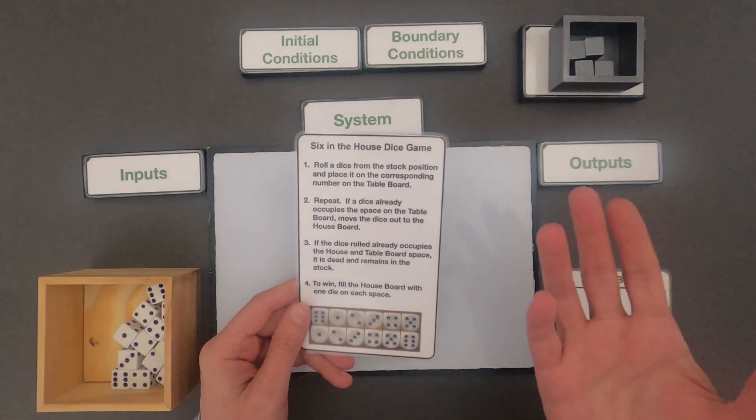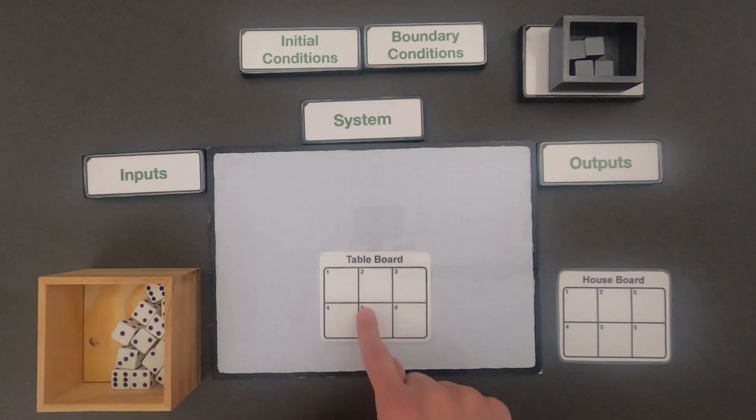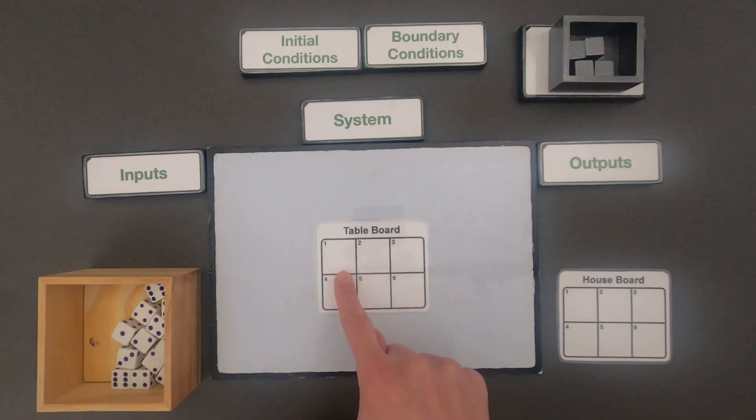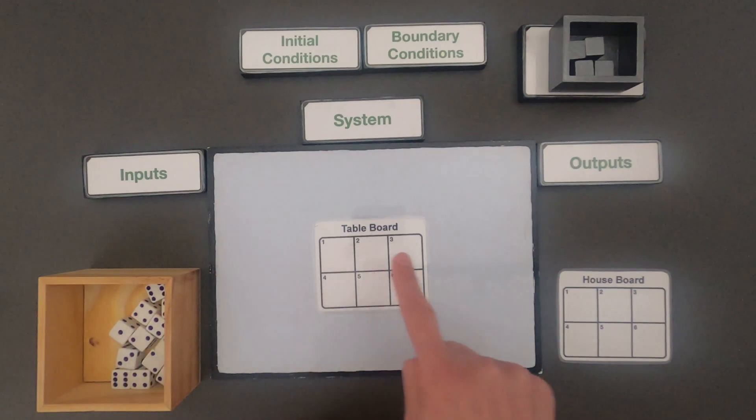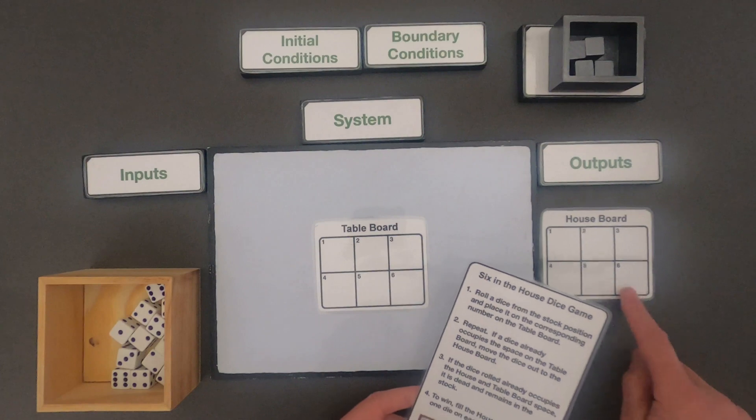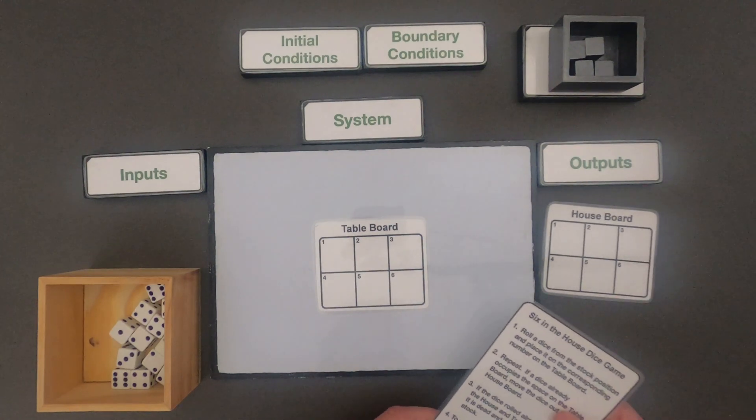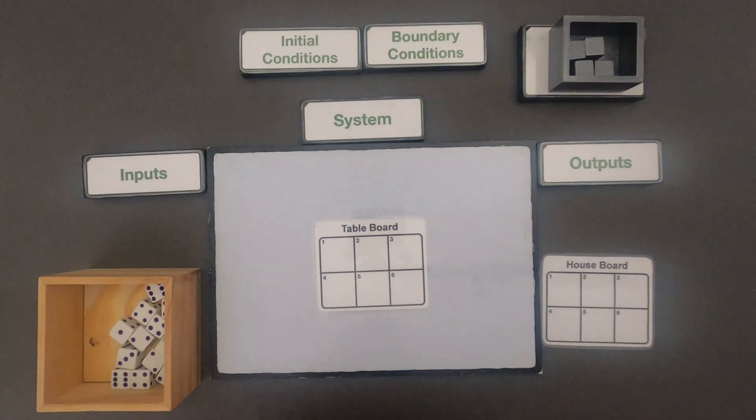So the game rules are fairly simple. What I'm going to do is roll dice and if the dice match the spot on the table board, it can move here. As more dice come across, they can push those over to the house board. And the goal is to fill the house board with one die in each space. And so to start,